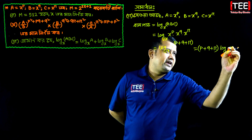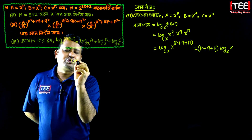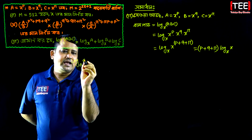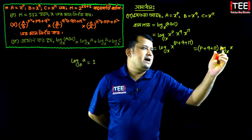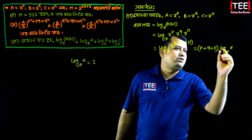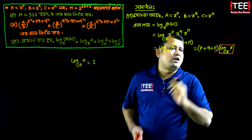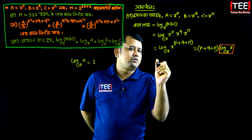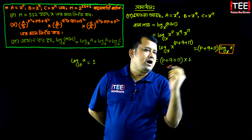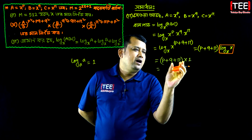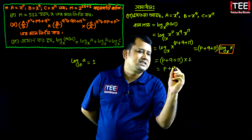R into a, the answer comes to 1. So we place 1 there. If we multiply p plus q plus r by 1, then it becomes p plus q plus r.